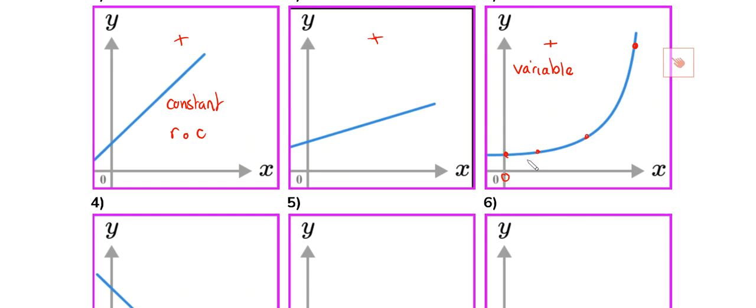So at this value of x, zero, we have the lowest rate of change. This value of x is slightly higher. This value of x is higher. This value of x is higher still.